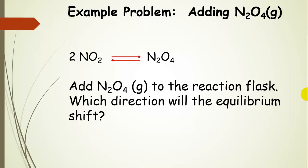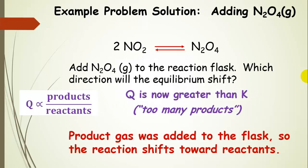Here's an example: suppose we add dinitrogen tetroxide (N₂O₄) to our reaction flask. Which direction will the equilibrium shift? Since we've added dinitrogen tetroxide, we've added product. That means Q is going to be larger than the equilibrium constant value — we have too many products. So since we added product, the reaction is going to shift toward reactants in order to try to get rid of some of that excess product.